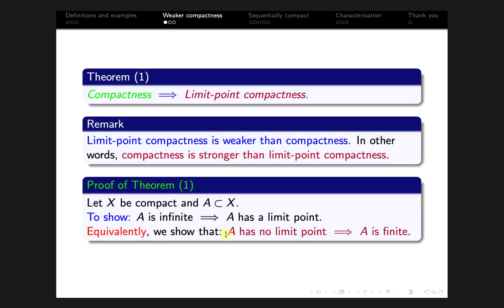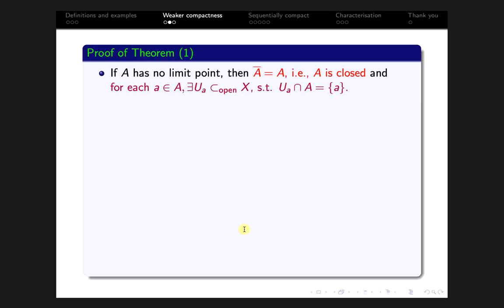Suppose A has no limit point. Then the closure of A equals A, because the closure is the smallest closed subset of X containing A, which equals A union A', where A' is the set of all limit points of A. By hypothesis A' is empty, so the closure of A equals A — that is, A is closed.